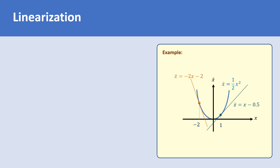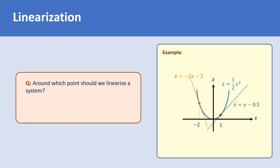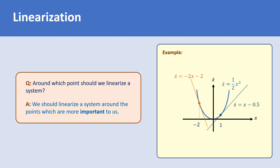These two approximations are very different. So the question is, which one should we use? Around which of these points should we linearize a system? The answer is that we should linearize a system around the points which are more important to us, as there is generally no single linear approximation that can approximate a nonlinear system for all values.